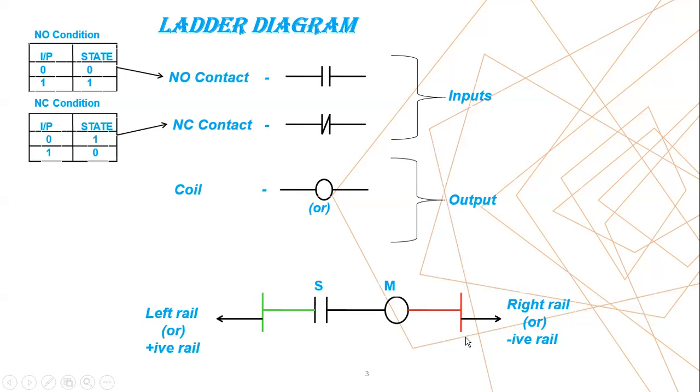And right side vertical line you can see, that is end of your program. So always your program should start from left to right. That means inputs should be placed in left-hand side of the line and output should be placed in right-hand side.